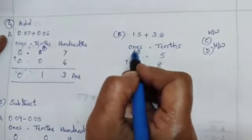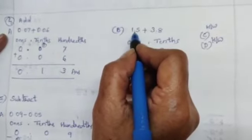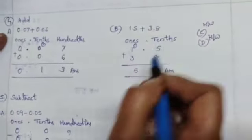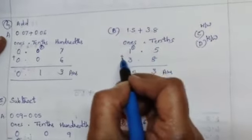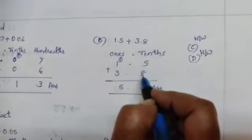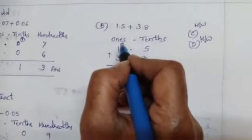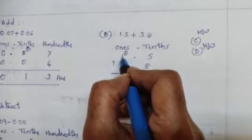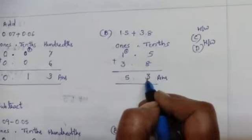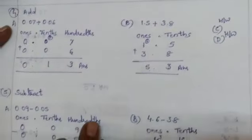B bit. Here only 2 digits are there. 1 digit is there after decimal point. So you have to write 1's, point, 10's. So 1.5 plus 3.8. 5 plus 8 is 13. 3 here carry 1. 1 plus 1 is 2. 2 plus 3 is 5. 5.3 is the answer. C and D bit you do it as homework.